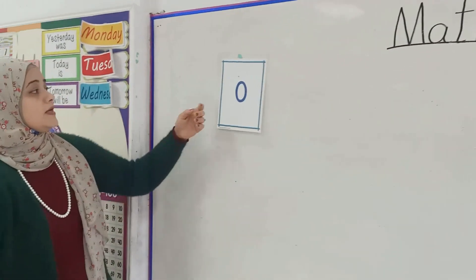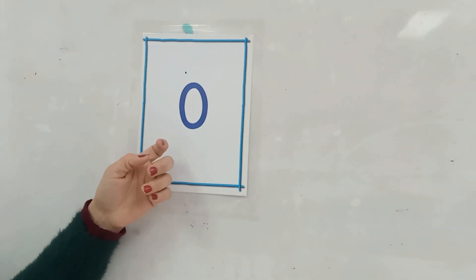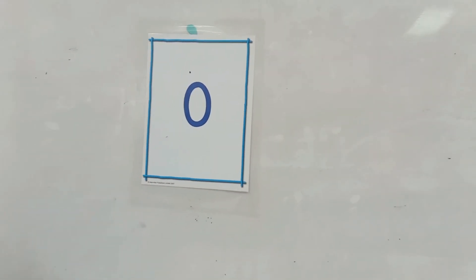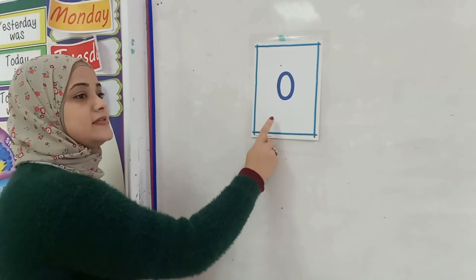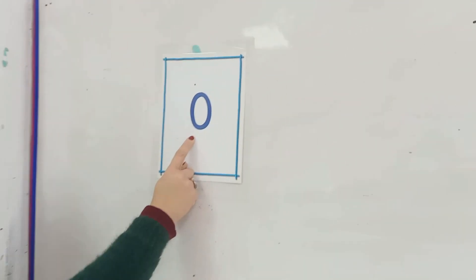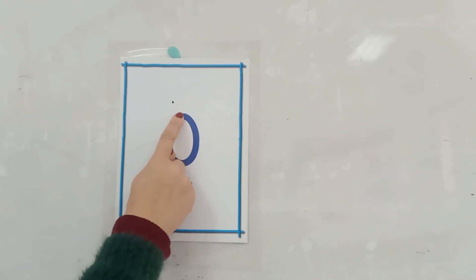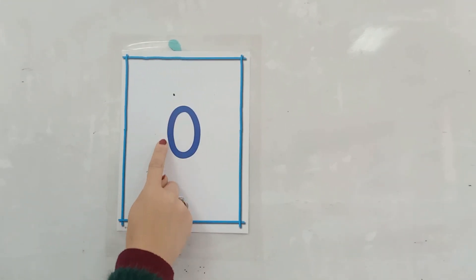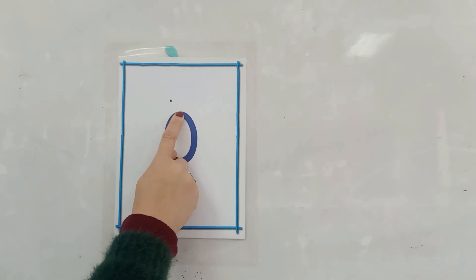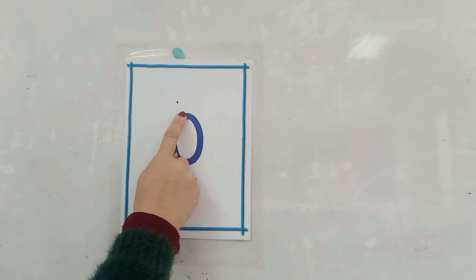What is this number? Yes, it is zero. It is zero. How do we write number zero? Starting point, a circle and stop. Again, starting point, a circle and stop.